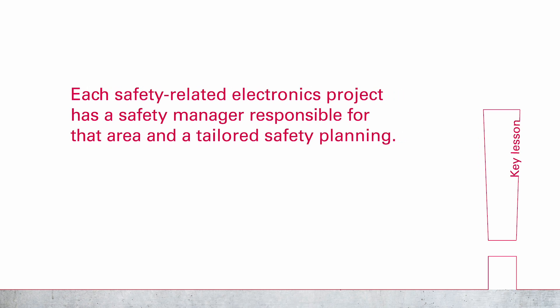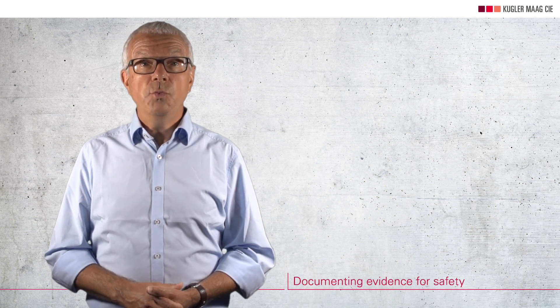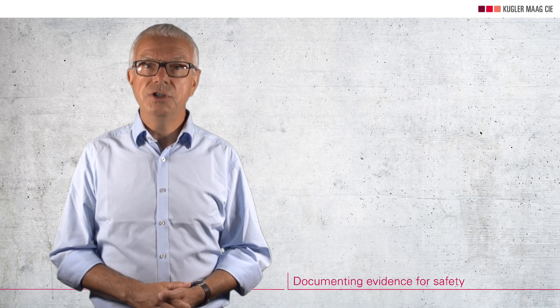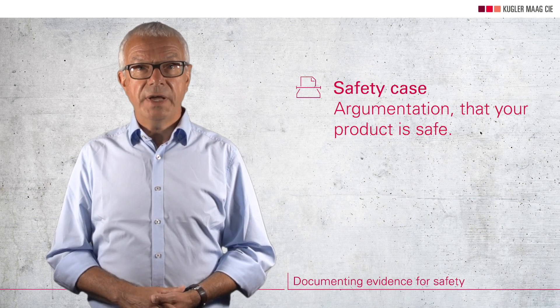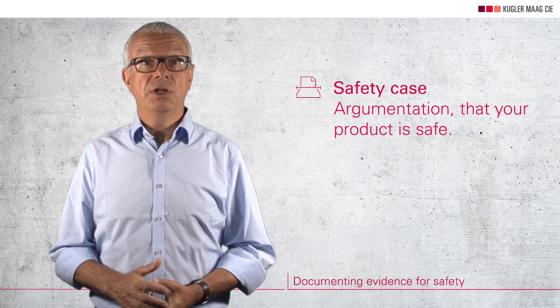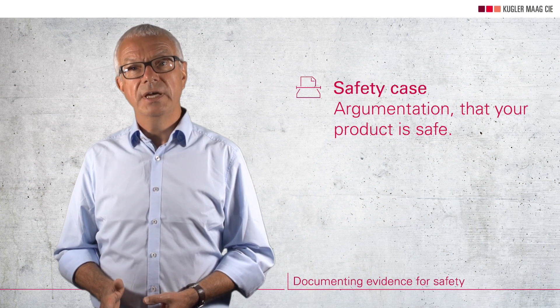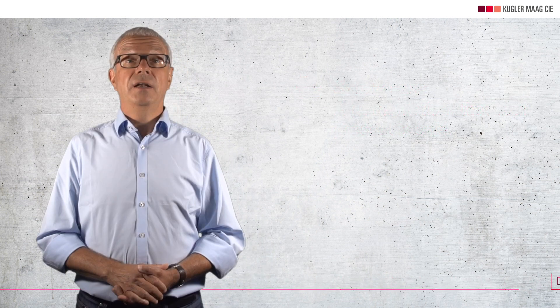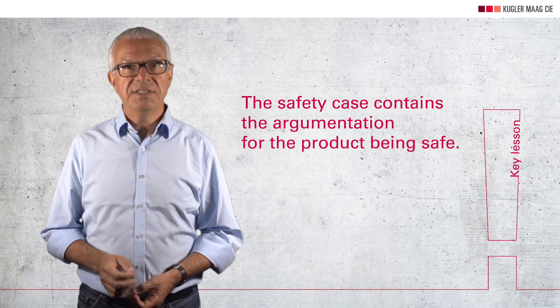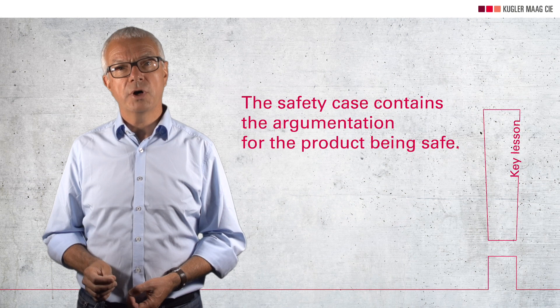Key lesson number three: each safety-related electronics project has a safety manager responsible for that area and tailored safety planning. The next point is about documenting safety evidence. One of the key work products we have to develop is a sound argumentation for the product being safe. This is called the safety case. It includes a suitable strategy to achieve safety, evidence that this strategy was actually followed, and the work products produced during development. Lesson number four: a key output of each project is a safety case containing the argumentation for the product being safe.